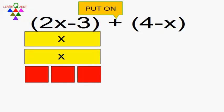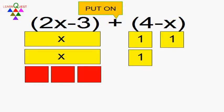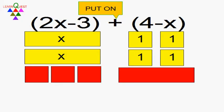The plus sign means put on. What do I need to put on? 4 minus x. So I take 4 small yellow squares and a red rectangle, and put that on the table.